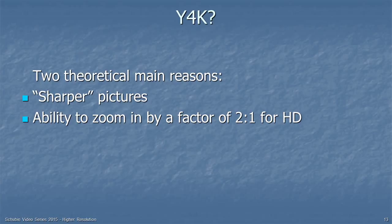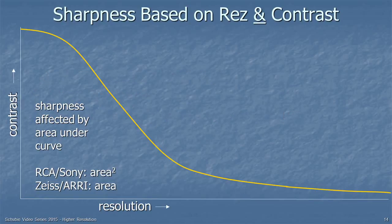Why do we even care about going from HD to 4K? There are two theoretical main reasons: one is that it'll deliver sharper pictures, and the other is the ability to zoom in by a factor of 2-to-1 and extract HD images out of the 4K image. Sharpness is based on both resolution and contrast. Here's an MTF curve — modulation transfer function — which shows how much contrast you get at different resolutions. Where you have essentially no resolution you get maximum contrast, and where you have maximum resolution you get minimum contrast. There are two schools of thought: the RCA and Sony school says sharpness is based on the square of the area under the MTF curve; the Arri and Zeiss school says it's based on the area under the curve. Either way, contrast has a significant effect.